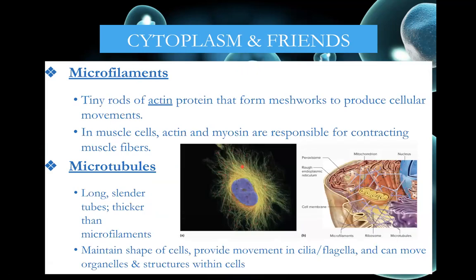Microfilaments and microtubules help provide structure within the cell as well as movement. Microfilaments are thinner and made of actin, which is especially important in muscle fibers as one of the prime movers. Microtubules are thicker and help maintain the shape of the cell and provide movement within the cilia and flagella.